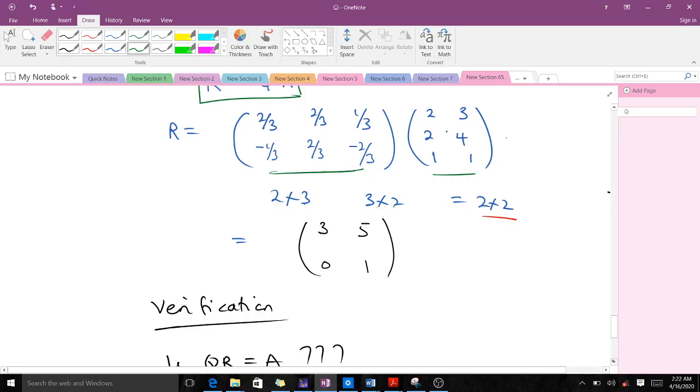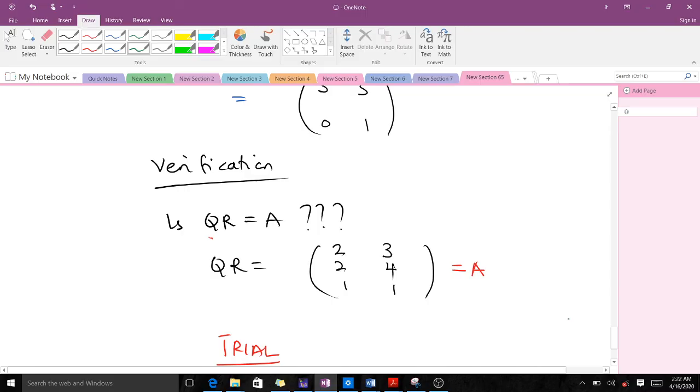That is it with the QR decomposition. But sometimes when you are done you would like to verify your answers. To verify, make sure when you multiply your Q matrix by your R matrix it should give you the A from the question. You realize that when you multiply Q by R from our answers we get this particular matrix which happens to be A. So everything is on point.